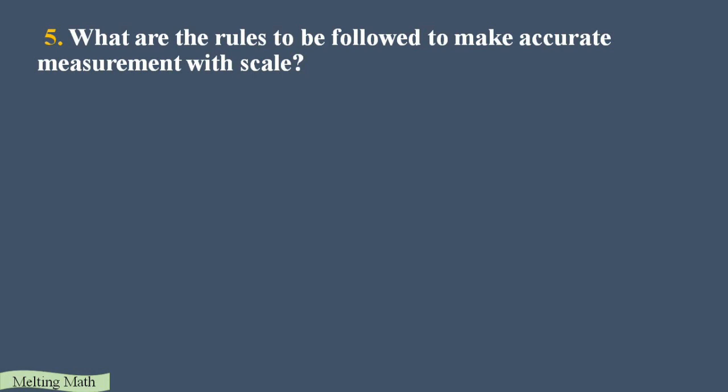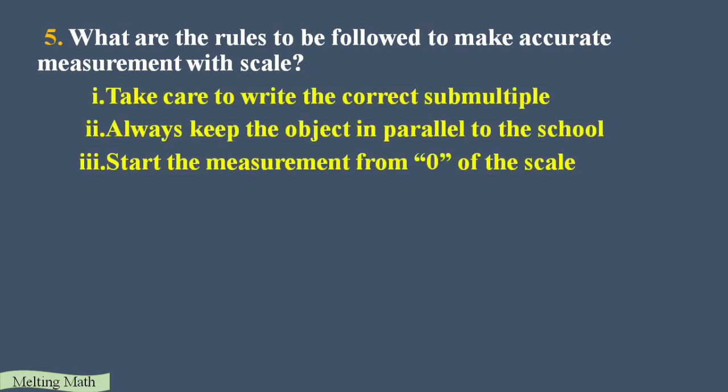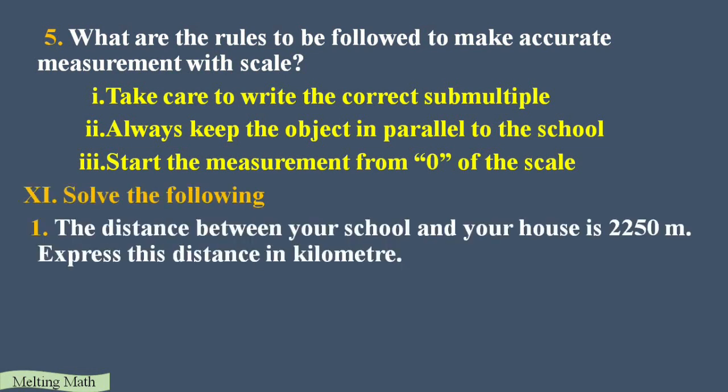Fifth question: what are the rules to be followed to make accurate measurements with a scale? There are three main rules. First: take care to write the correct sub-multiple, for example 2.2. Second: always keep the object parallel to the scale. Third: start the measurement from zero of the scale — every scale starts with zero centimeters, not one centimeter, so always begin from zero.